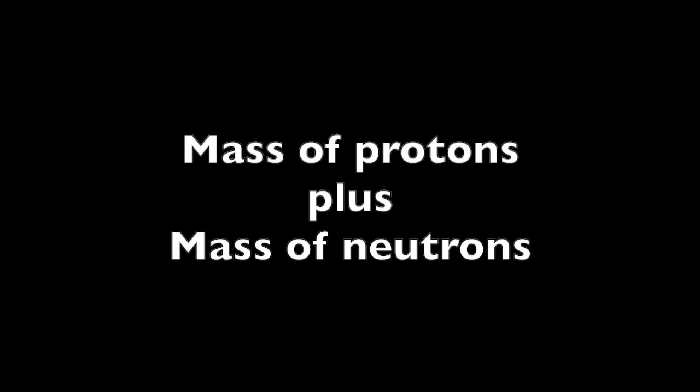How do we find the mass of an atom? Well, the mass of an atom is approximately equal to the mass of protons in the atom, plus the mass of the neutrons in the atom.